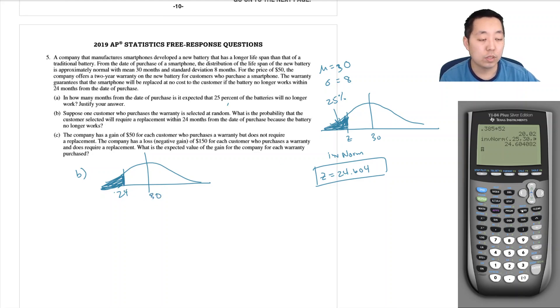The lower would be negative 1E99, the upper would be 24, the mean would be 30, and the standard deviation would be 8. So I get this probability to equal 0.2266.